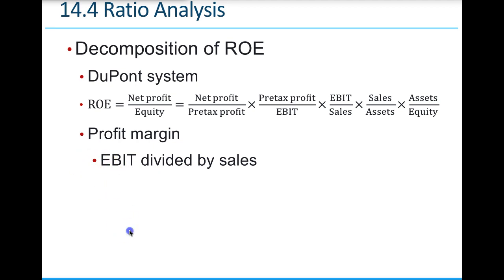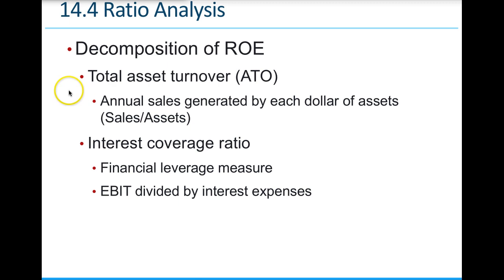EBIT divided by sales calculates the operating profit margin. Total asset turnover measures annual sales generated by each dollar of assets. We want to see how effective assets are at generating sales. If a store operates only four hours a day and generates $10,000 in sales, then opening it for 24 hours and selling $100,000 a day shows how the asset is generating more sales — an increasing total asset turnover is what we want to see.